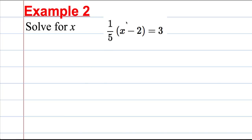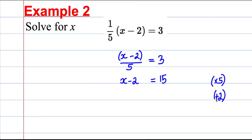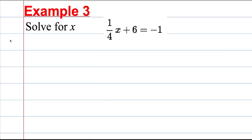Example 2: one fifth of the entire bracket (X minus 2) equals 3. Converting: (X − 2) divided by 5 equals 3. Multiply both sides by 5 to get X − 2 = 15, then add 2 to both sides: X = 17. Check: 17 − 2 = 15, and one fifth of 15 is indeed 3.